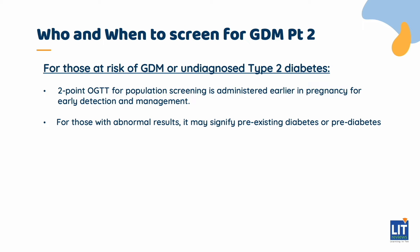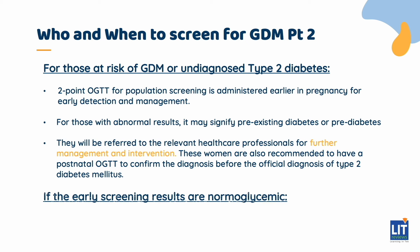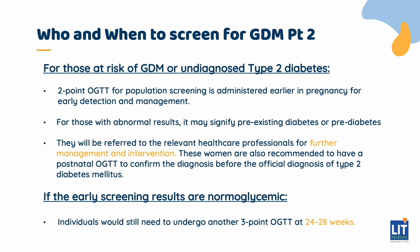For those with abnormal results, they will be referred to a relevant healthcare professional for further management and intervention. If the early screening results are normal, these individuals would still need to undergo another 3-point OGTT at 24 to 28 weeks.